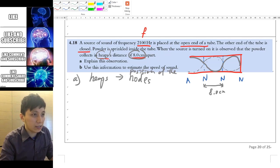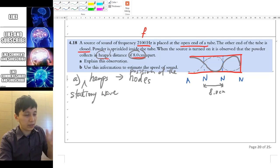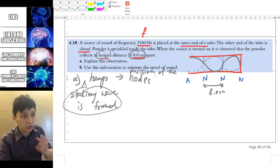Well, I guess the question didn't say so. And so I guess you need to specify. Now you have got a standing or stationary wave. They are the same term. So stationary wave is formed. And those heaps will be the position of the node where the powder will be gathered together.